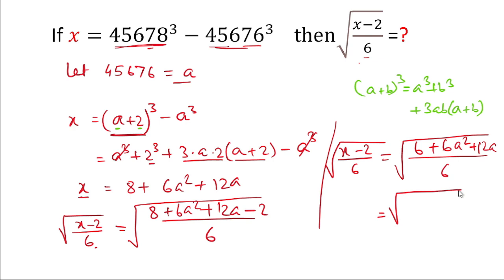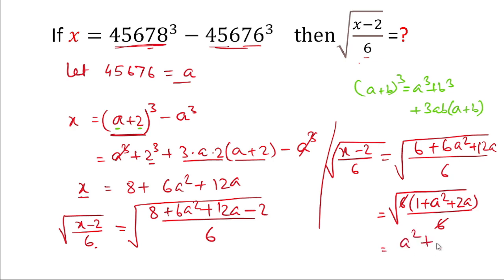For the numerator, we take 6 as a common factor. Taking 6 common, the remaining expression inside the bracket is 1 plus a squared plus 2a. Divided by 6, the 6 and 6 cancel out, leaving us with the square root of (a squared plus 2a plus 1).